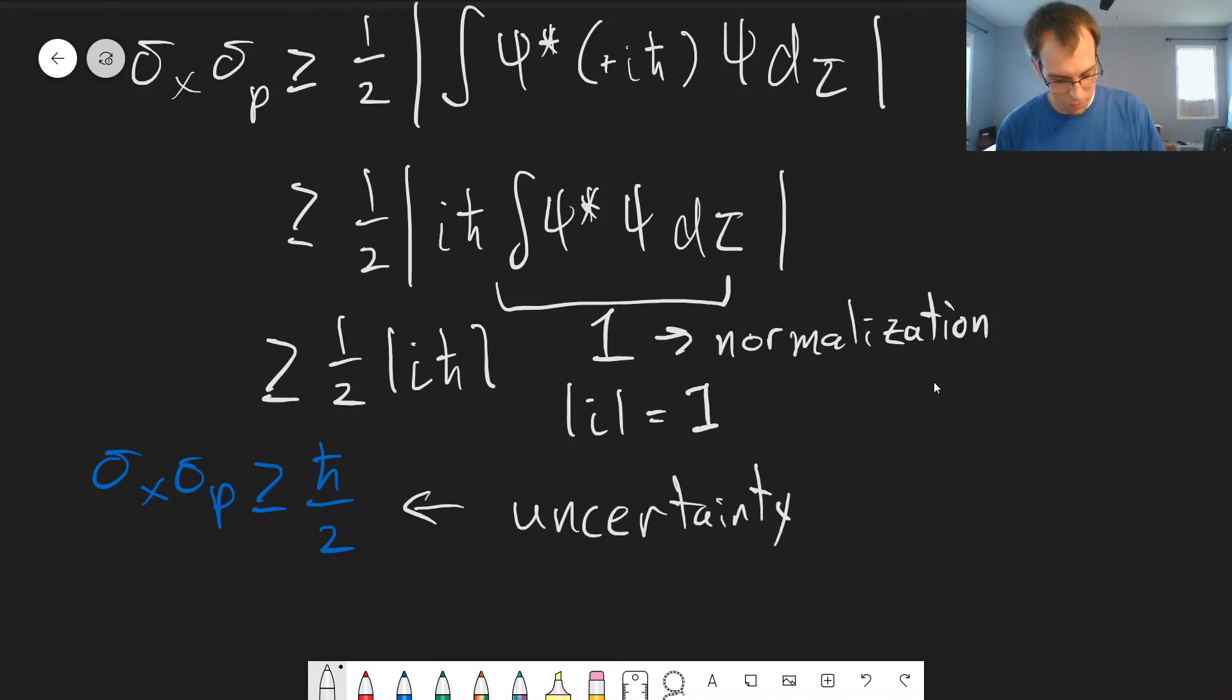The fact that we have an uncertainty principle between position and momentum is due to the fact that the operators do not commute. This relationship between uncertainty principles and commutators is something that's generic across quantum mechanics. The sigma x sigma p uncertainty principle is not the only uncertainty principle, there are other uncertainty principles that exist as well. This is just the most famous and physically relevant uncertainty principle that we encounter on a frequent basis.